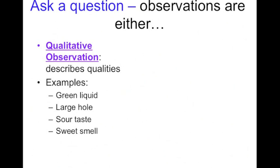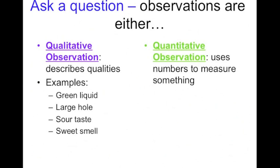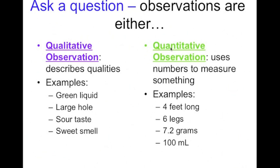A quantitative observation uses numbers to measure something. You can see the quantity or numbers is in here. I see that N and that's where I think numbers. L reminds me I'm going to use letters, words and descriptions. N reminds me I'm going to be using numbers. Examples: four feet long, six legs, seven point two grams, a hundred milliliters, that kind of thing.